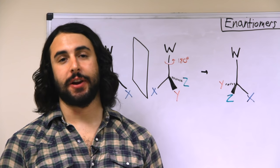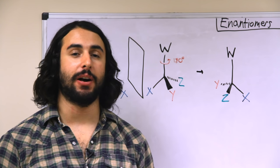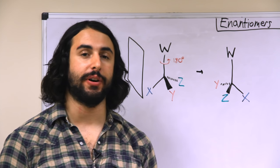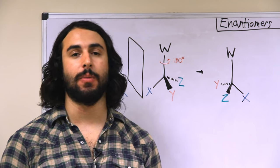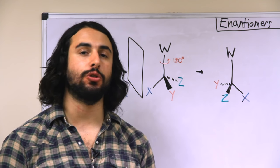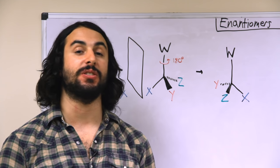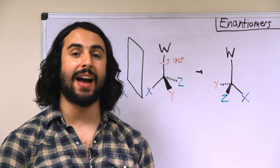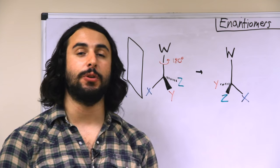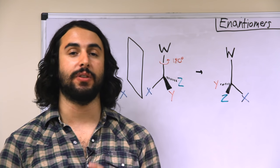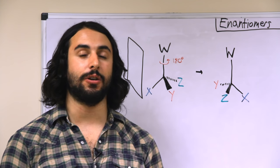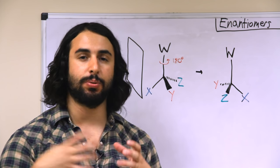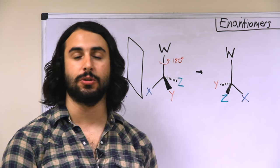So the first kind of stereoisomeric relationship I want to talk about involves molecules that are called enantiomers of one another. Enantiomers are molecules that are non-superposable mirror images of each other. In other words, they are stereoisomers, so they have the same connectivity. But if you take the mirror image of one of the compounds, you get the other and they're not the same because they do not overlap precisely the same way in three-dimensional space.